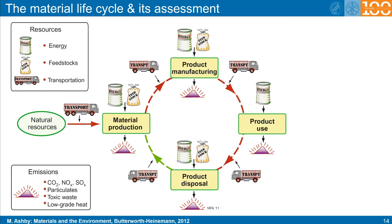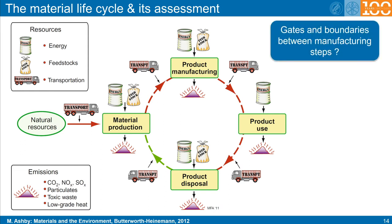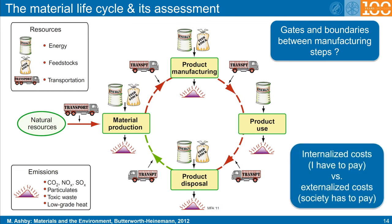An important aspect of such life cycle assessment procedures is the question of where the gates and boundaries are placed between the individual manufacturing steps along the value chain. This also determines which costs must be covered by the manufacturer and which costs can be externalized to be covered by society. In other words, where does a stepwise calculation start and where does it end when considering only a part of the total life cycle chain? This is important because often these different steps along the life cycle are done by different companies. Therefore, stepwise life cycle assessments do not cover the complete through-process life cycle, but only individual parts of the entire chain.